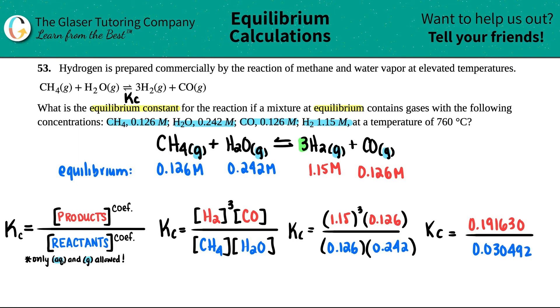Now all we got to do is just divide them. So 0.191630 divided by 0.030492. And let's see. I'm looking at my sig figs. Does really anybody care at sig figs at this point? No. But just in case, three sig figs, 6.28. And there you go.